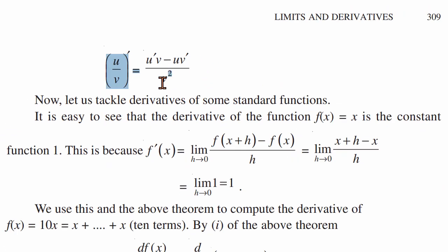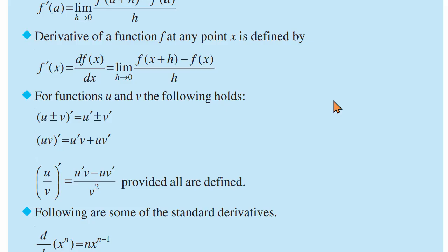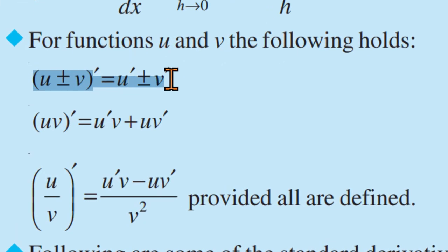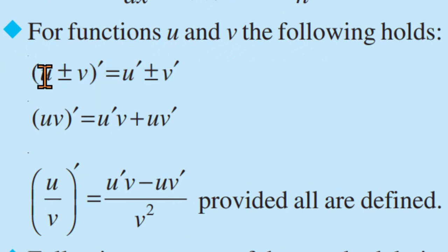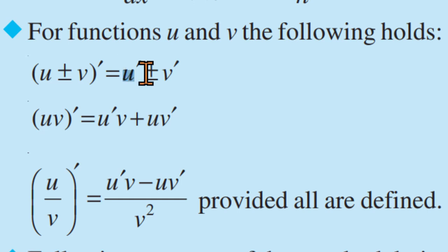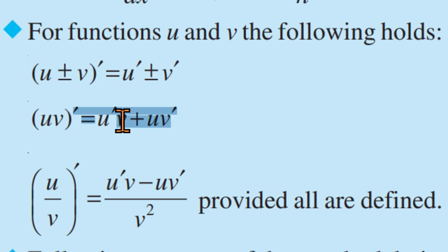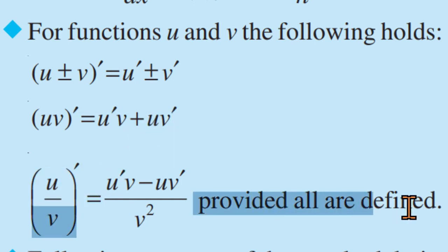This is the quotient rule. Note that v must not be 0, because v squared in the denominator cannot be 0. So we use this quotient rule when the denominator is non-zero.